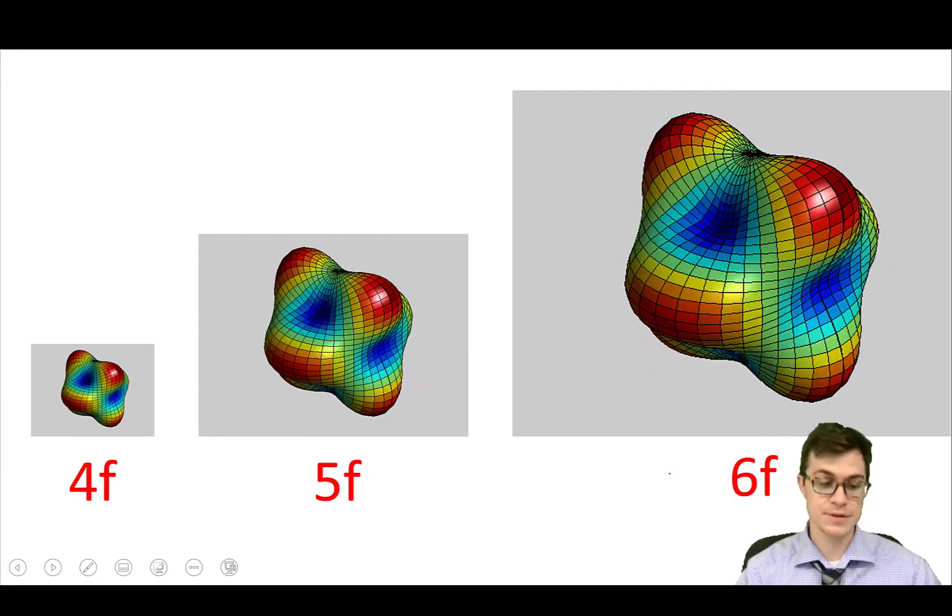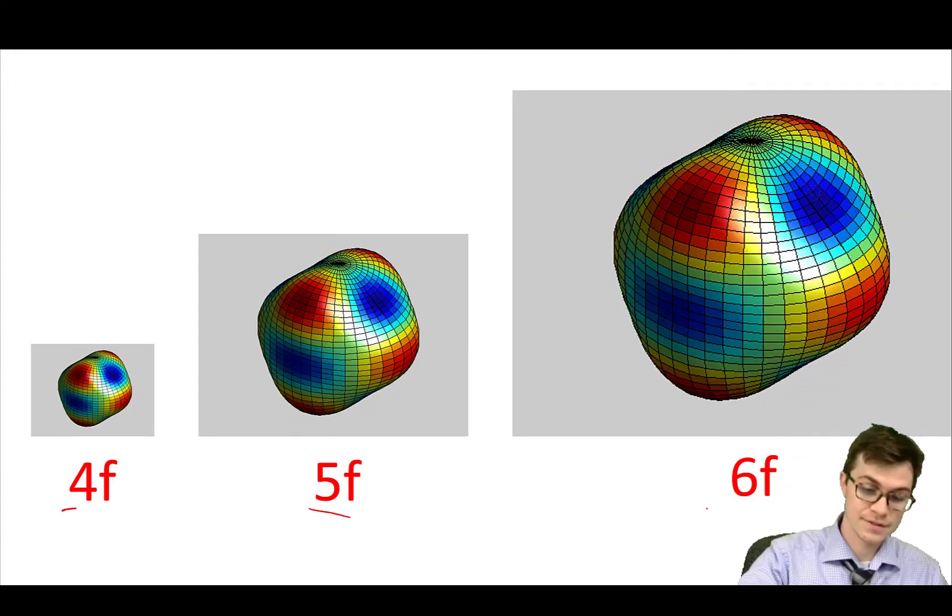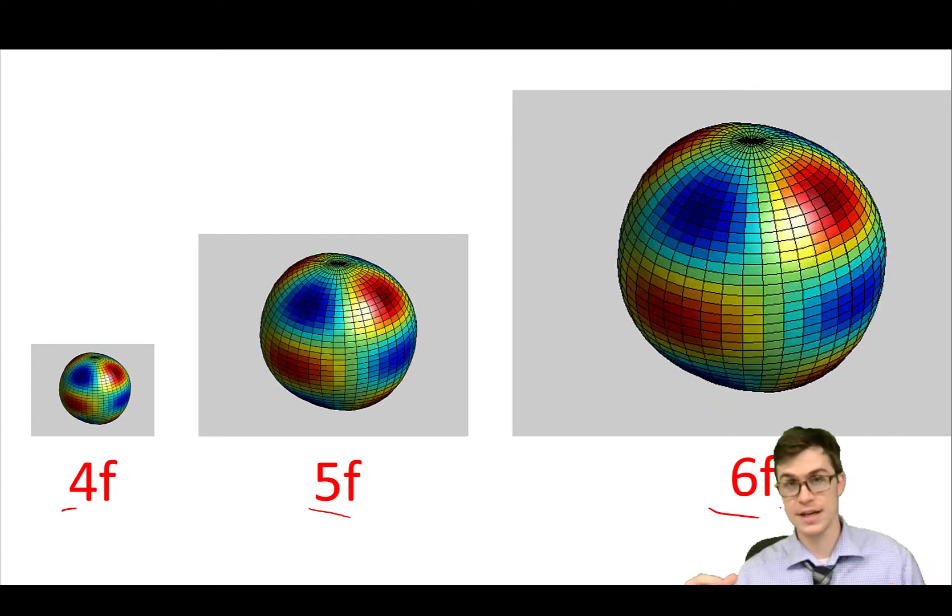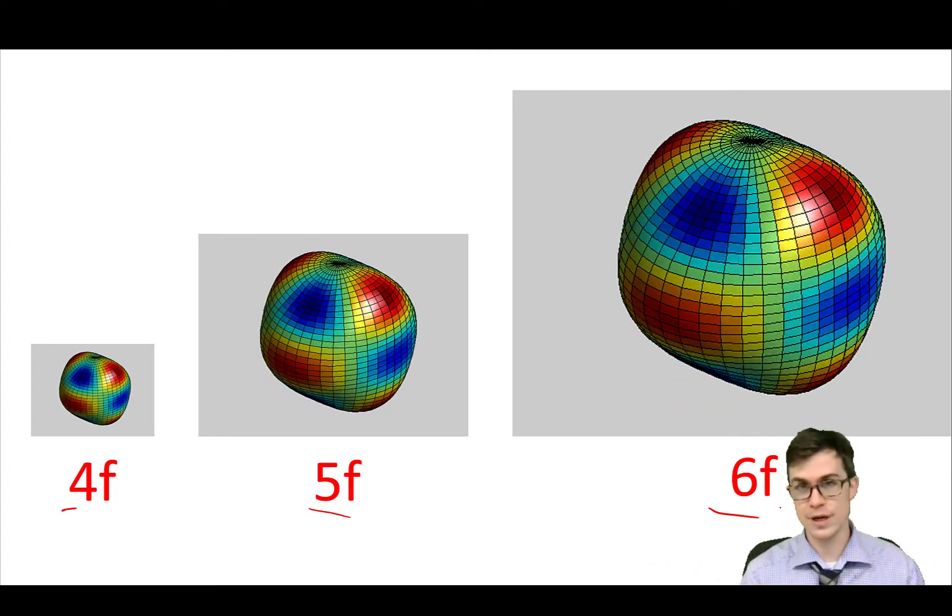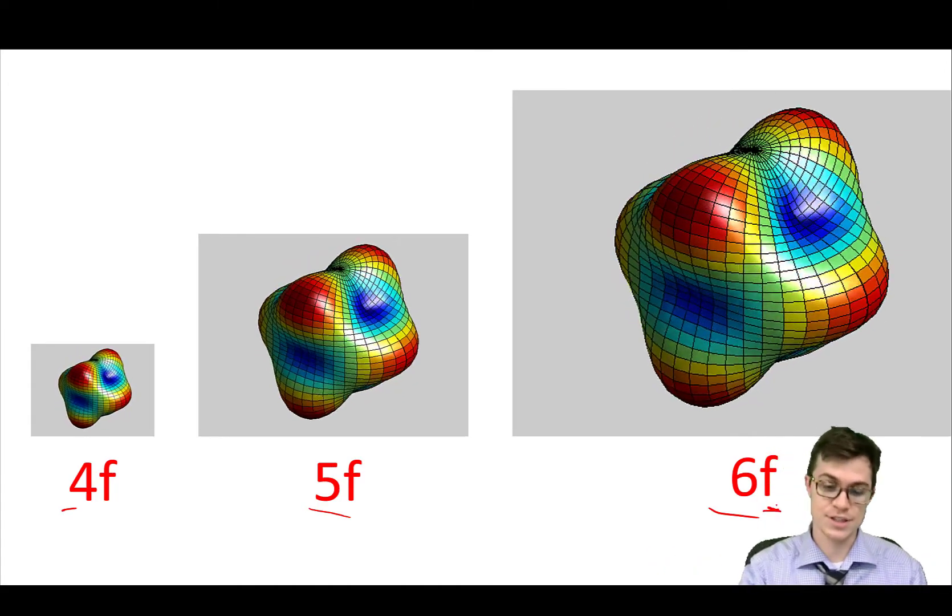If I have something similar with the F shapes, you can see that it goes 4, 5, 6. The wave gets bigger as the number gets bigger, but the shape of the wave is the same because they are all F shapes.